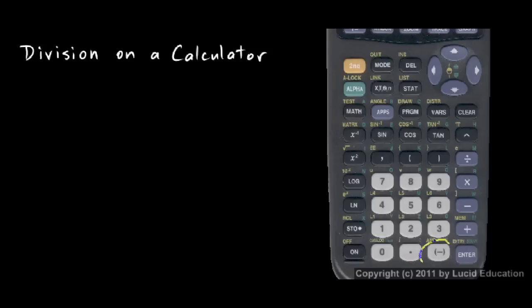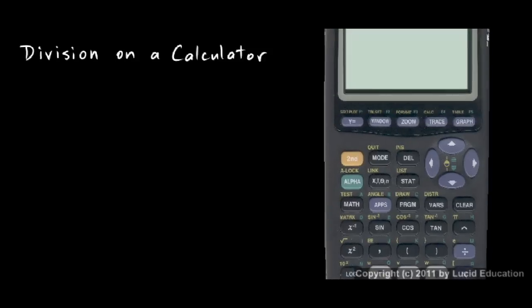And then down on the bottom row, this is the negative key. Use that to indicate the opposite of something.